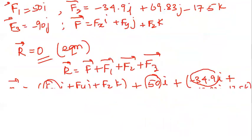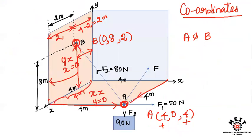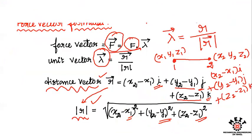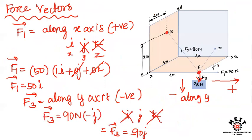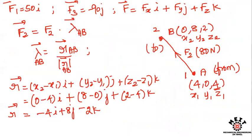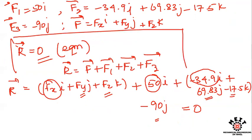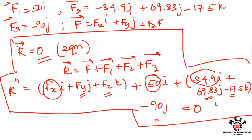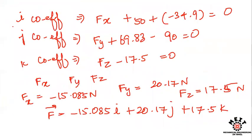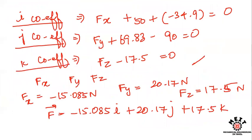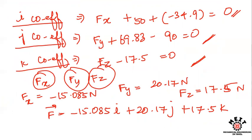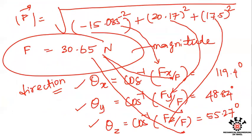This is how we solve a three-dimensional equilibrium of particles problem using the vector approach. The steps are: find the coordinates of points A and B, express each force as a vector, set the resultant vector equal to zero, and solve for the unknown force components Fx, Fy, and Fz to find the magnitude and direction. Thank you.